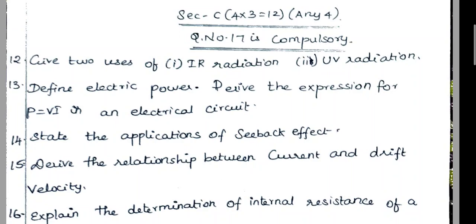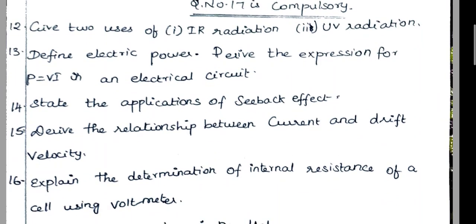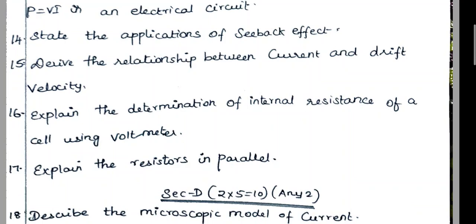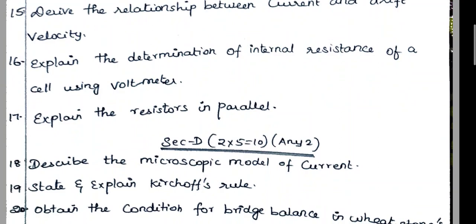Fourteen question — state the applications of Seebeck effect. Fifteen question — derive the relationship between current and drift velocity. Sixteen question — explain the determination of internal resistance of a cell using voltmeter. Seventeen question — explain the resistors in parallel.